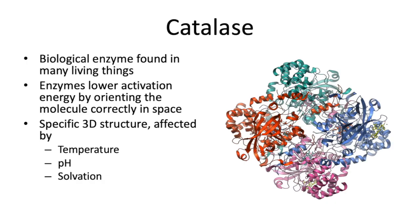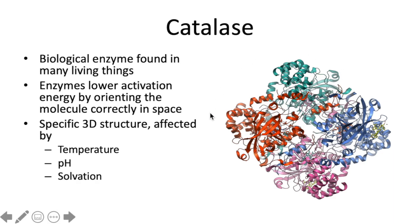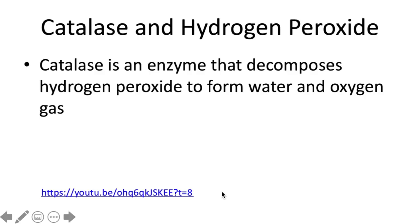Why does that happen? If the temperature changes, you might break some of the intermolecular forces that help maintain the alpha helix and beta sheet shapes within the molecule. If you change the pH, some of the residues that have positive or negative charges might get protonated or deprotonated, suddenly gaining or losing a charge that can affect the overall three-dimensional shape of the enzyme. If the three-dimensional structure of the enzyme is disrupted, it no longer can function for its purpose because it won't be able to orient molecules correctly — they'll no longer fit into the active site.